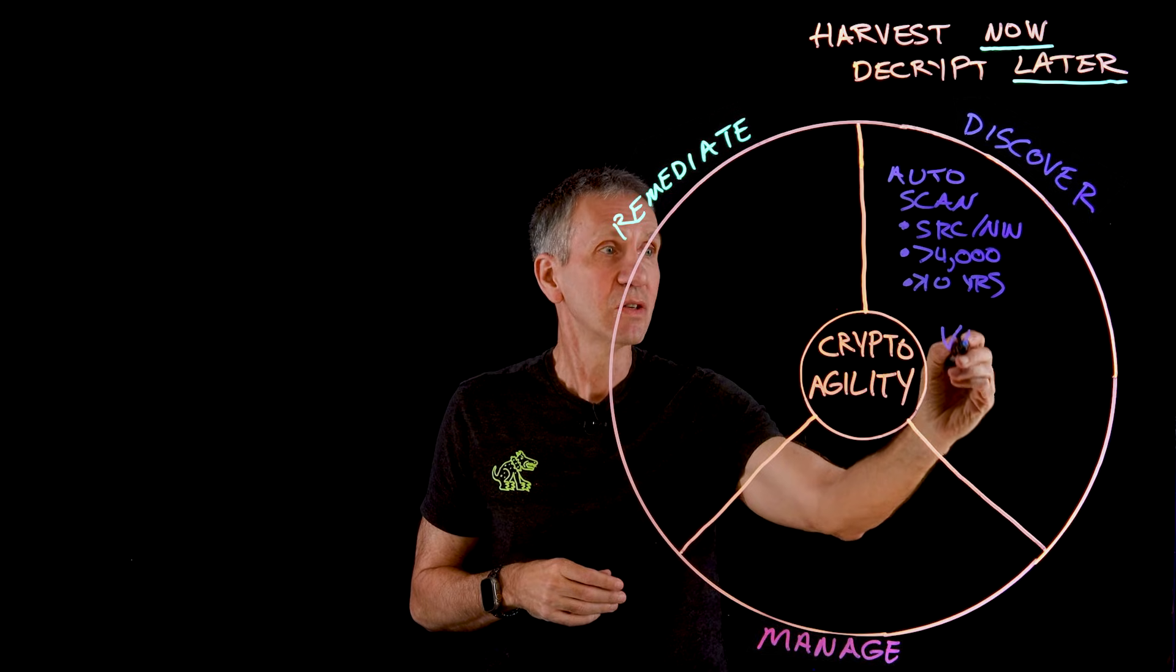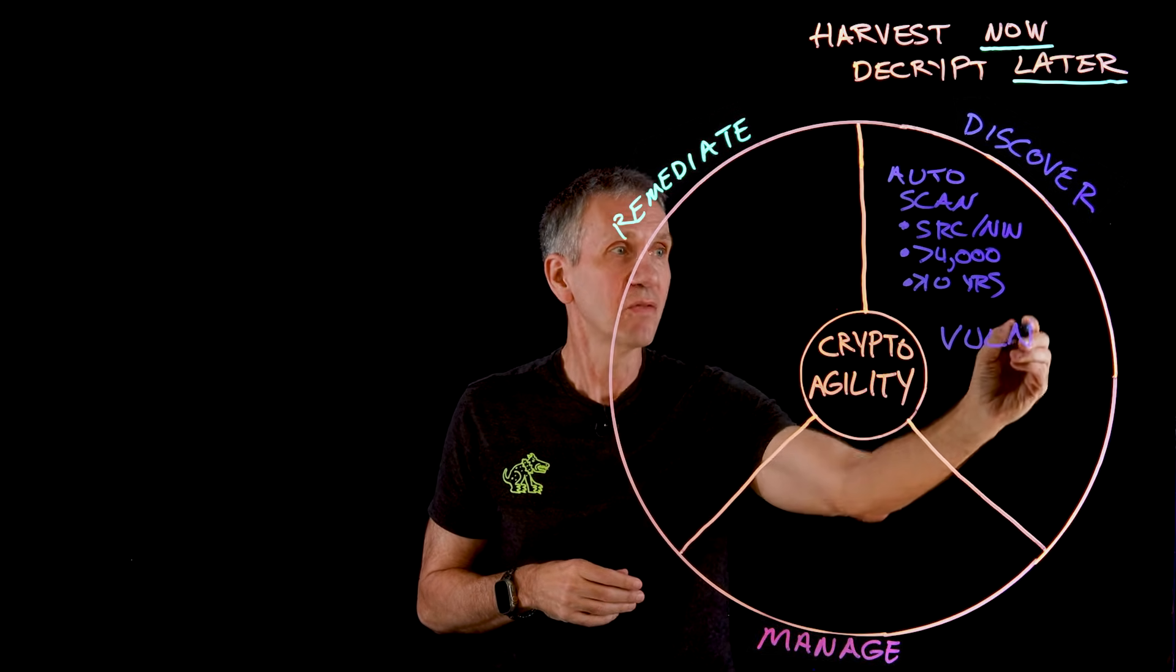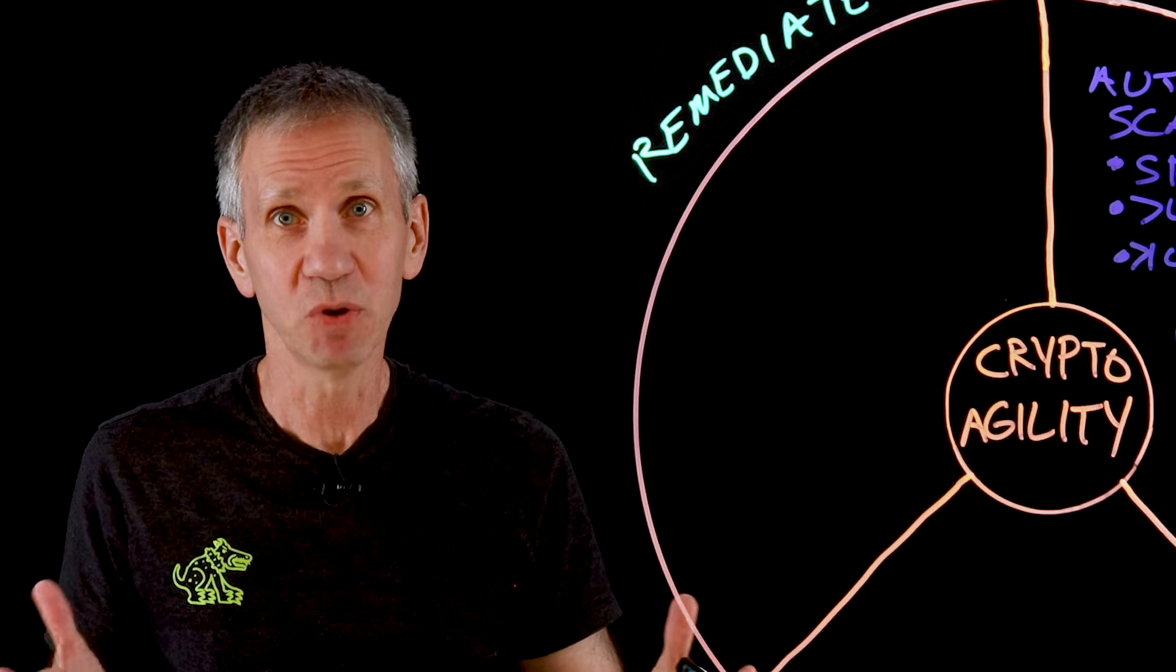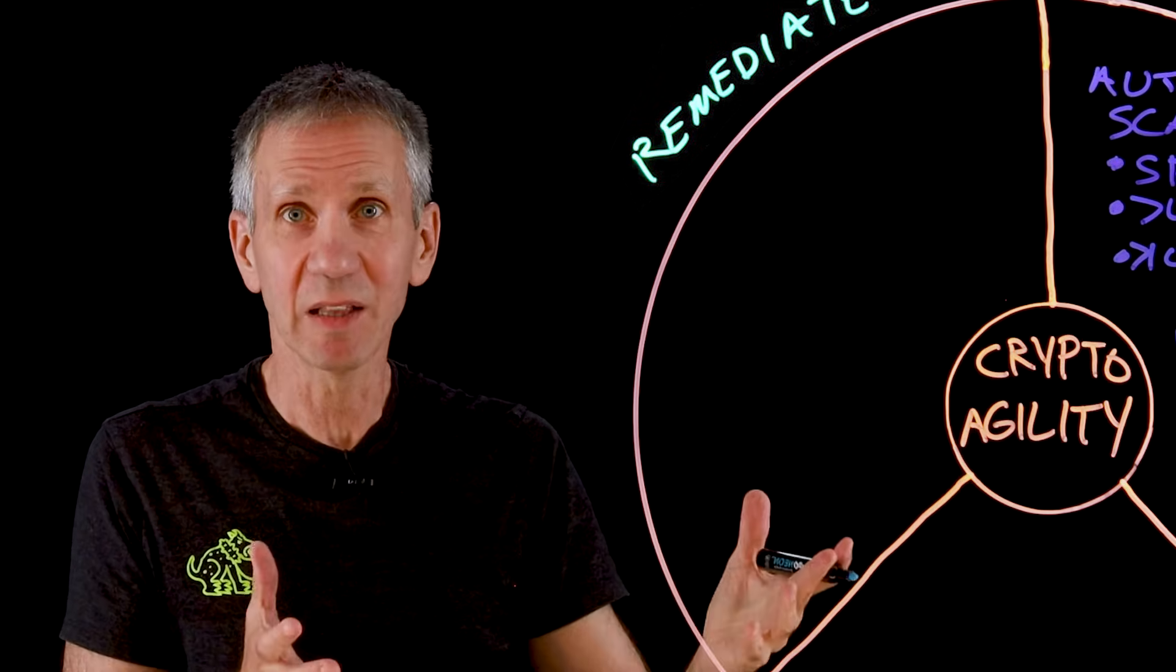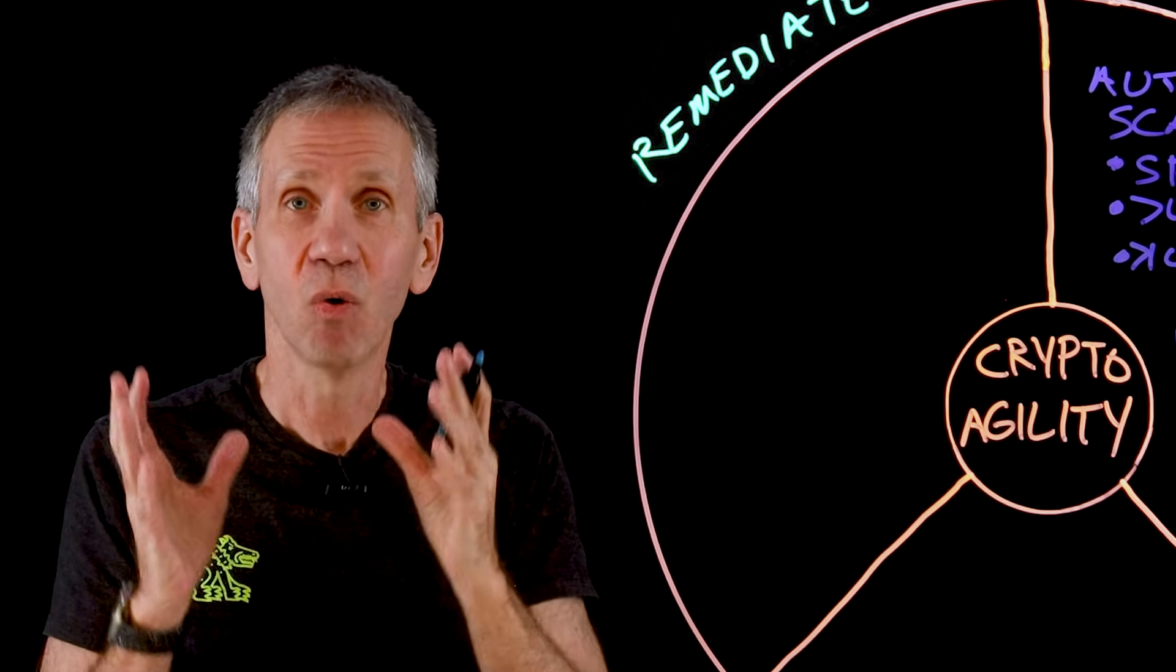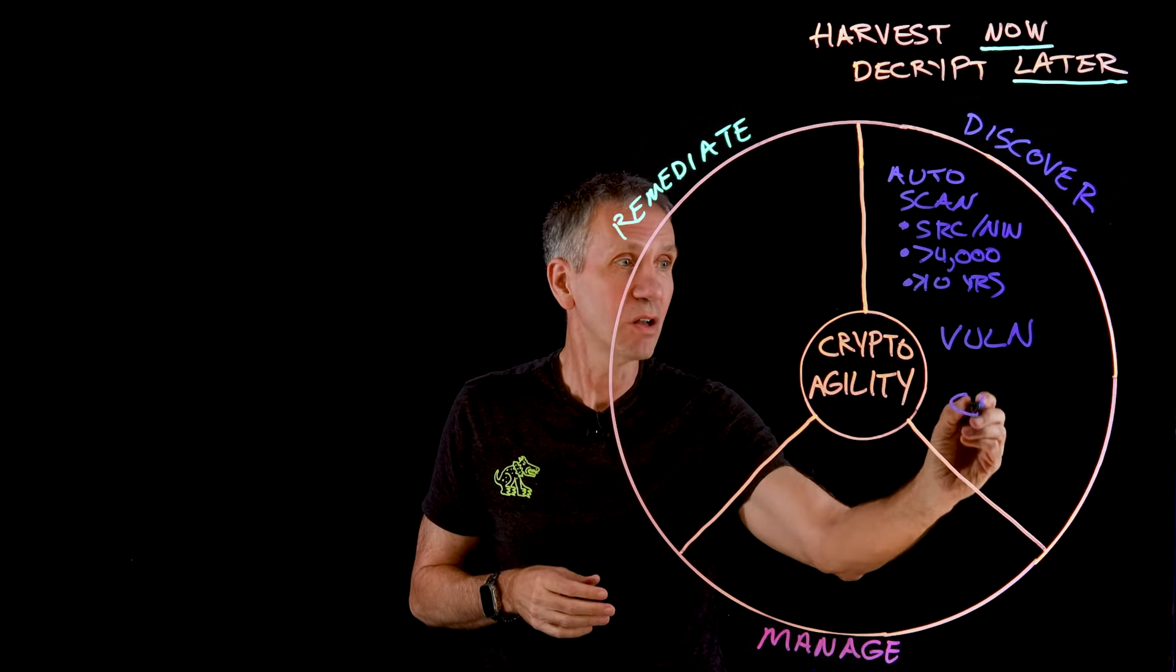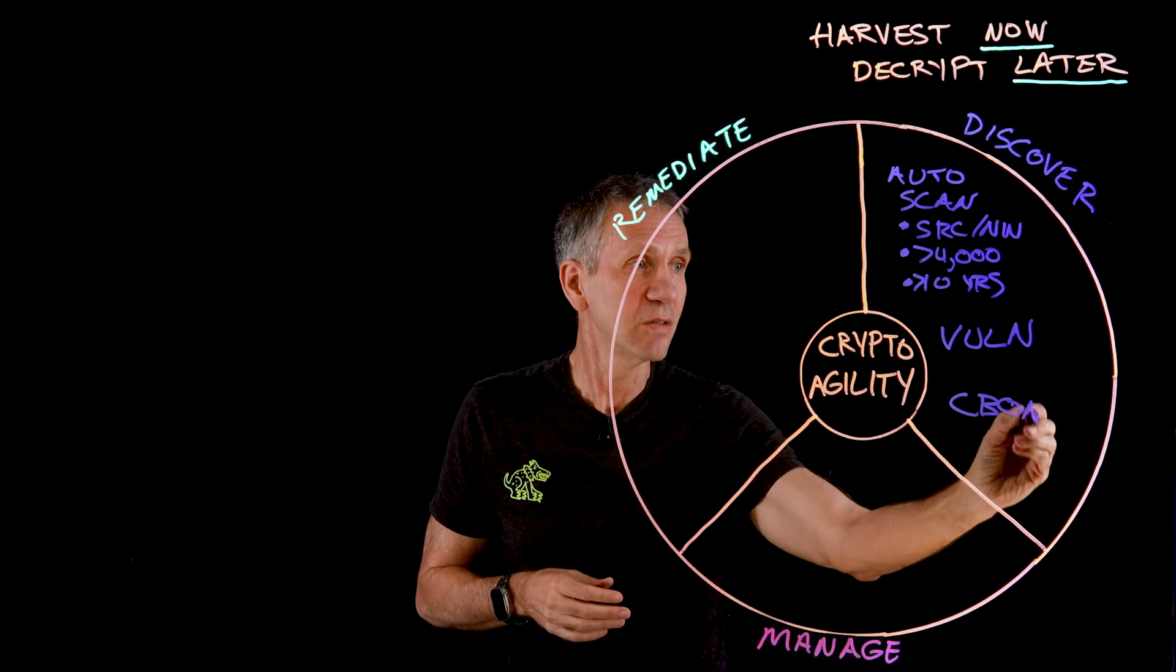And then once you've done that, another thing you want to take a look at is if I know where all of this stuff is, I want to find out where the vulnerable crypto is. Probably it's most of it today, but I'm going to create that list and catalog what kinds of algorithms are being used in each one of these cases.